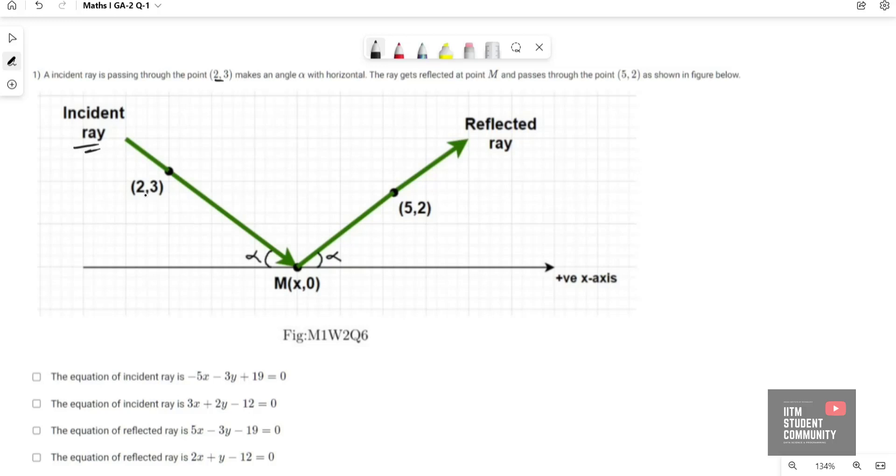Second question: a ray incident passing through point (2,3) makes an angle alpha with horizontal. The ray gets reflected at point M and passes through the point (5,2) as shown in figure below. Here we have a reflected ray and incident ray. Let us take slopes of both the lines.